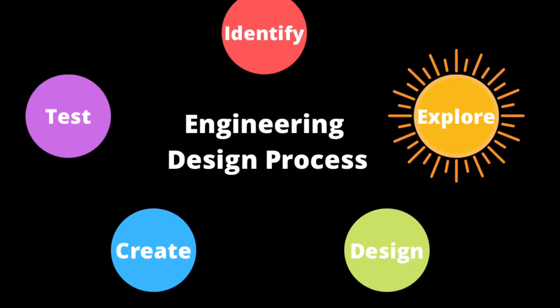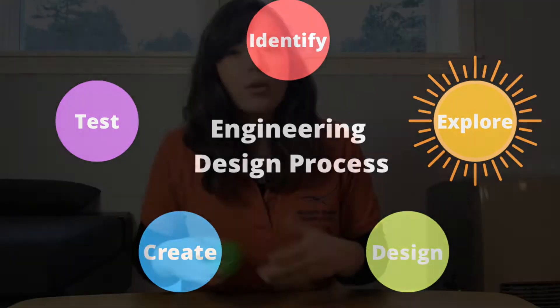That brings us to the second step of the engineering design process, which is to explore. We are going to gather information, brainstorm, maybe gather some materials and start playing with them — just start exploring ways we could solve this problem. For me that means I'm going to raid my recycling bin to look for materials. I'll be right back. Remember everybody, you can pause this video at any time if you need a little extra time to gather materials, to build, or to test. You don't need to go at the fast pace I'm going at.